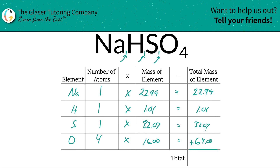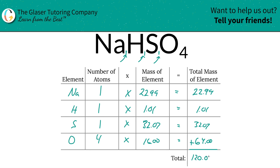Now to find the total mass of the entire compound, all you've got to do is add up all these total masses of each individual element. It's 120.07. The units here are grams per mole, because we're solving for molar mass.